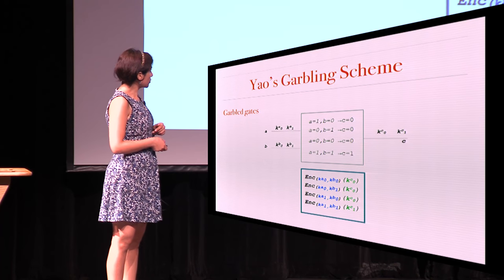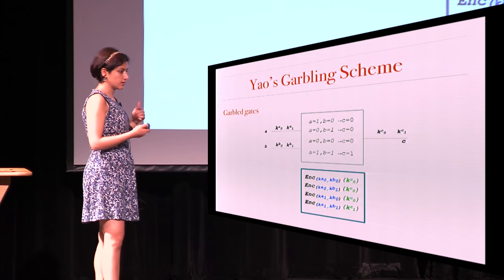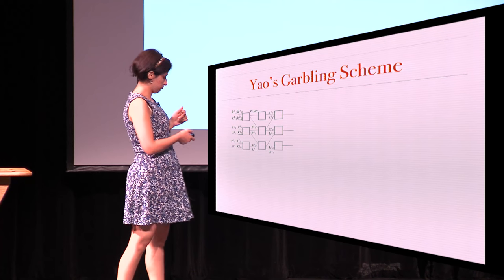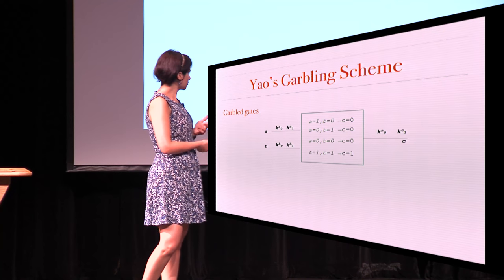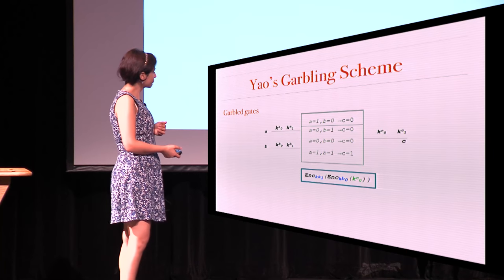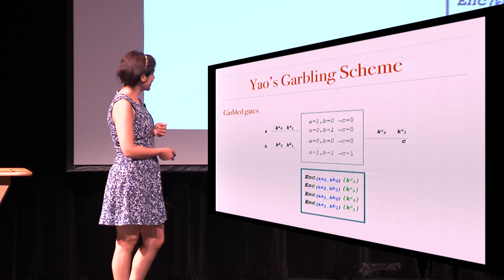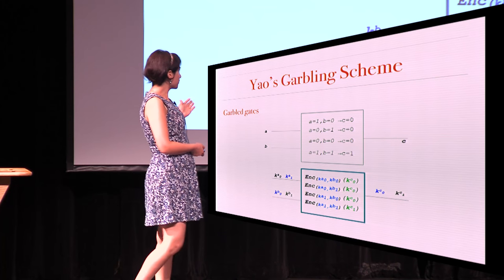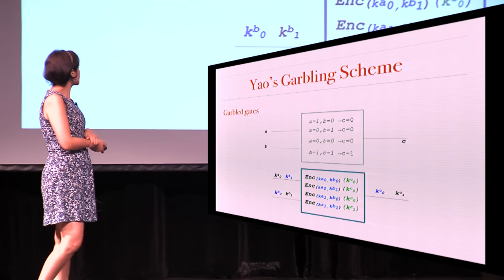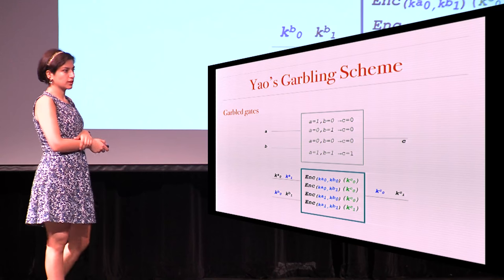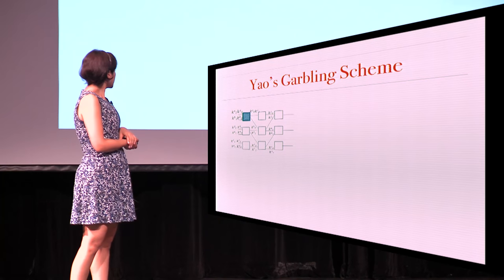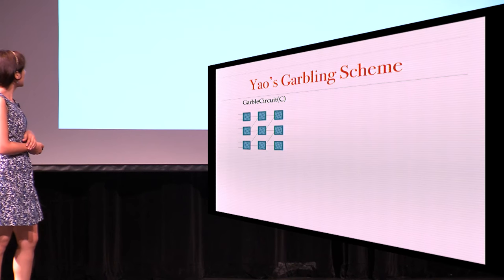We use this notation of encryption with two keys to show this double encryption of the output key. We do the same thing for all rows and randomize the ciphertexts. To evaluate this gate, you need to have one of the keys of each of the wires, and then you can decipher exactly one of these ciphertexts and get back the output key. For security, we have to make sure that you only get one of those keys out, not anything else. For garbling the entire circuit, you just repeat the same thing for all of the gates and you have the garbled circuit.